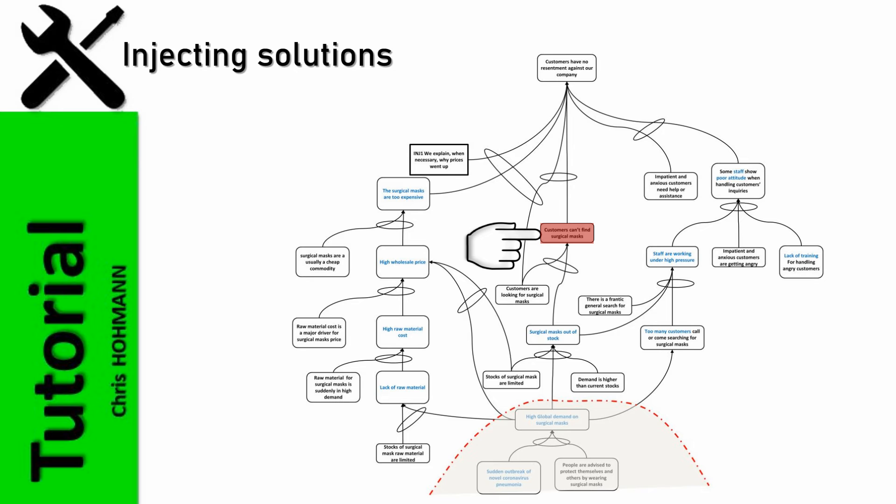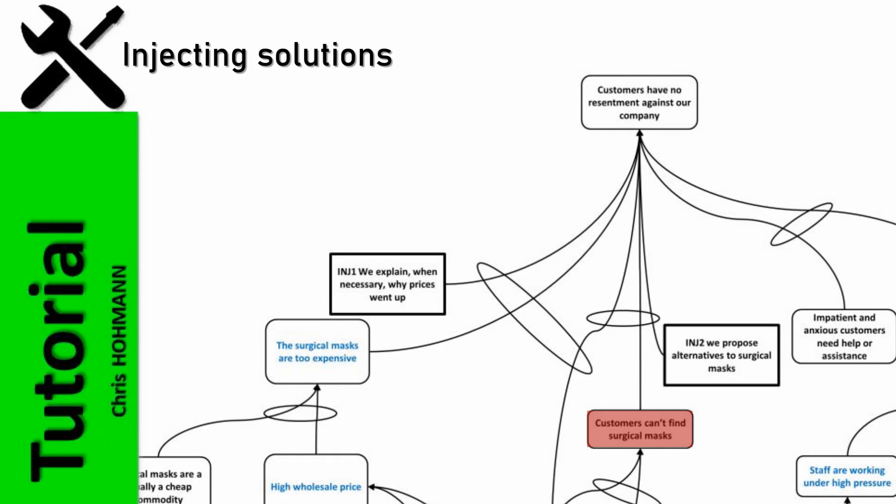The second pain of customers is not finding any masks. My proposed injection 2 is we propose alternatives to surgical masks. There are other devices like mouth shields, mouth guards, or cloth masks. These solutions may not be as good as surgical masks, but better than nothing at all. Maybe we can come up with a creative new way as alternatives. Please note that my purpose is to show how to build a future reality tree, but I am no microbiologist or physician. Therefore, please focus on the thinking process.